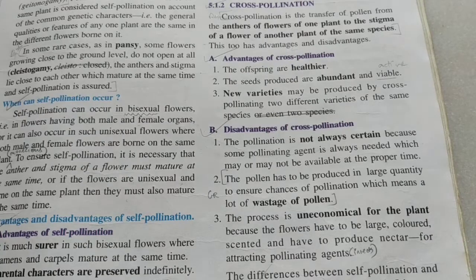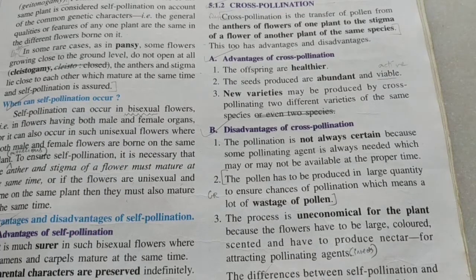In self-pollination, the pollen grain just has to fall on the stigma of the same flower or a neighboring flower of the same plant, so it is more economical. However, the fact that cross-pollination gives healthier offsprings is enough for nature to prefer it.